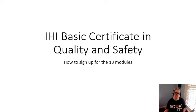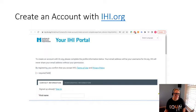The first thing you will do is go to IHI.org and click 'Create an Account.' This page will appear where it says 'Your IHI Portal,' and you'll go through and fill out all the information. This is just the start of the page — the next slide will show you what it looks like further down.